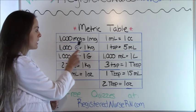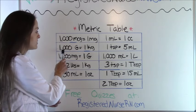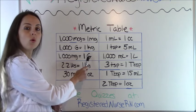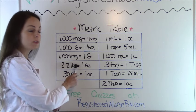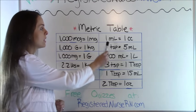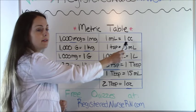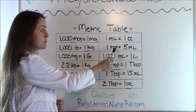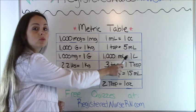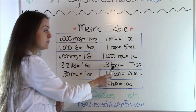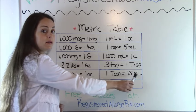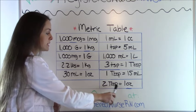You have 1,000 micrograms equals 1 milligram. 1,000 grams equals 1 kilogram. 1,000 milligrams equals 1 gram. 1,000 milligrams equals 1 ounce. 1 milliliter equals 1 cc. 1 teaspoon equals 5 milliliters. 1,000 milliliters equals 1 liter. 3 teaspoons equals 1 tablespoon. 1 tablespoon equals 15 milliliters. 2 tablespoons equals 1 ounce.